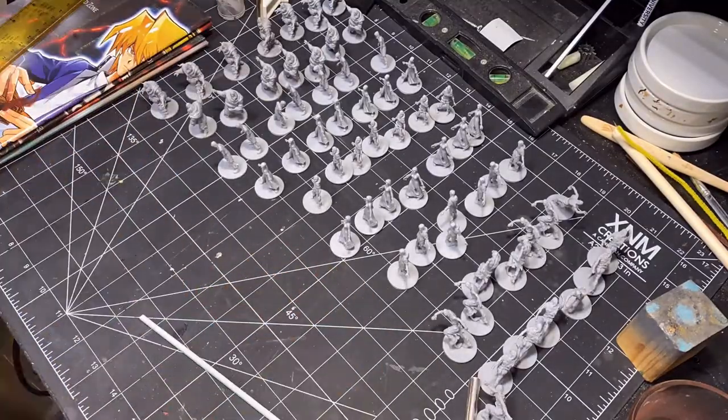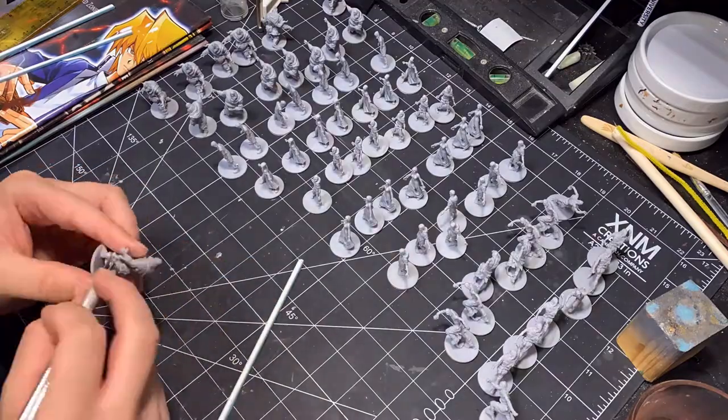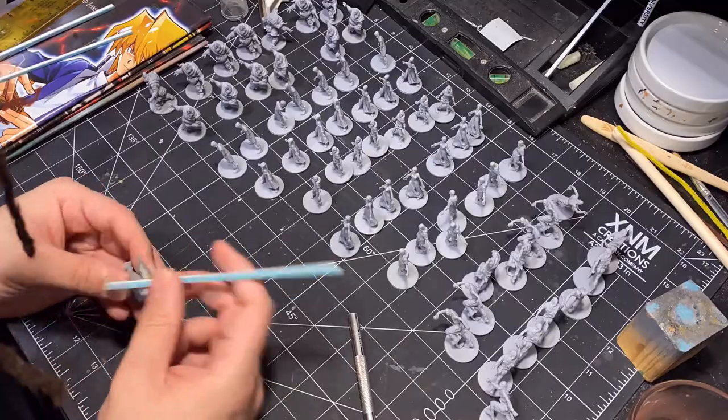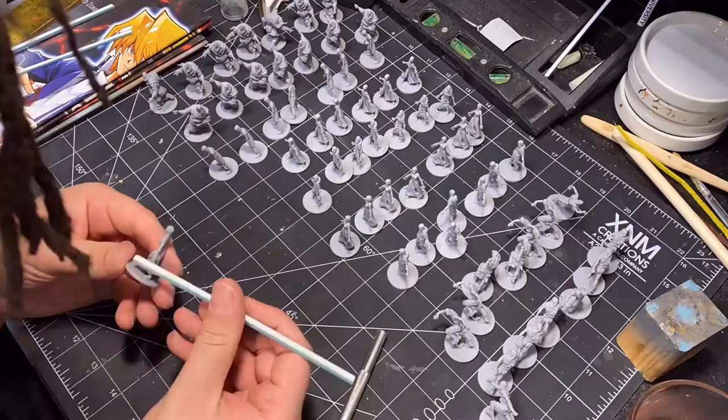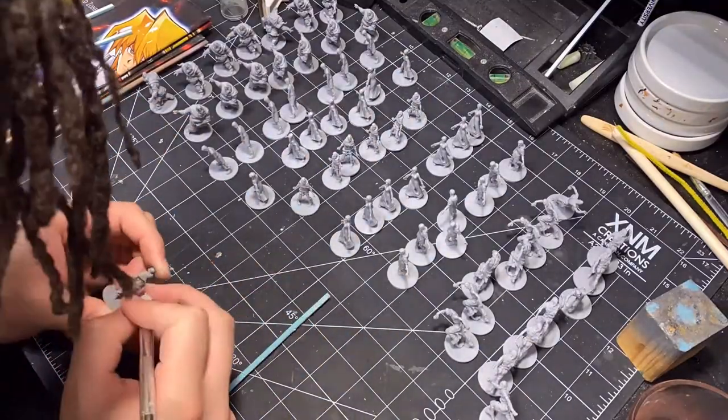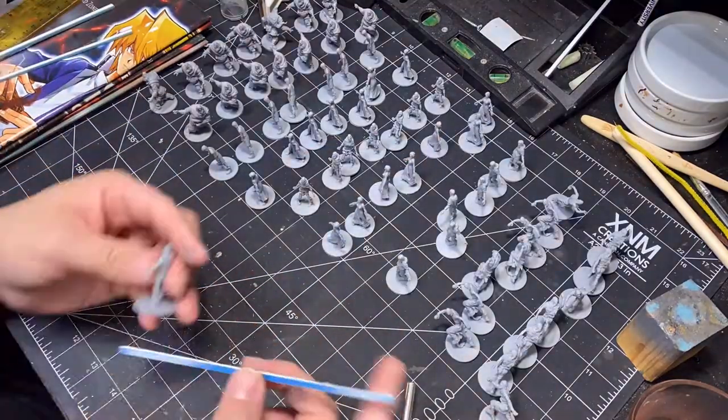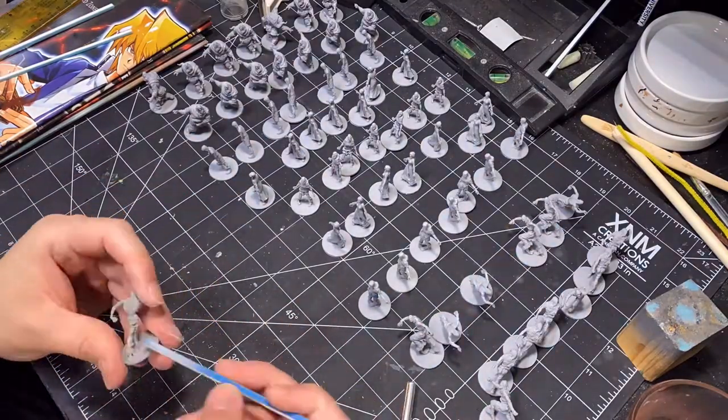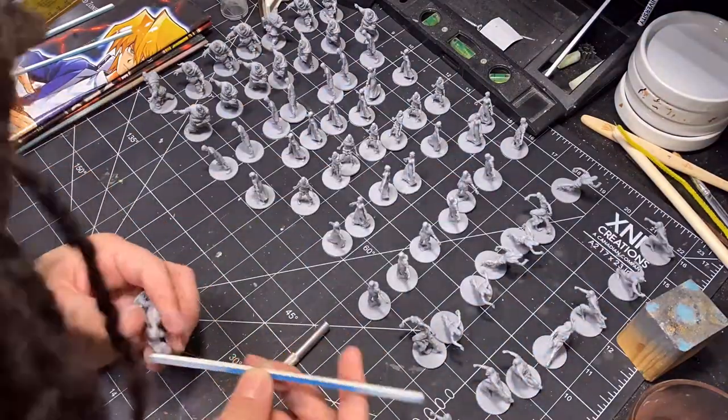First things first, we're going to clean up the models. You should do this with all models you're painting, especially if they're coming from board games. That sort of plastic will leave mold lines and injection spots with pock marks. Those really awful mold lines you want to take out. So I'm using an exacto knife here and then just a sanding twig, that's sandpaper on a little stick.